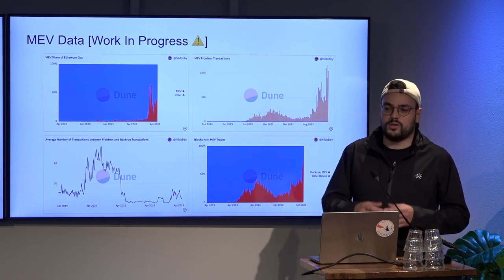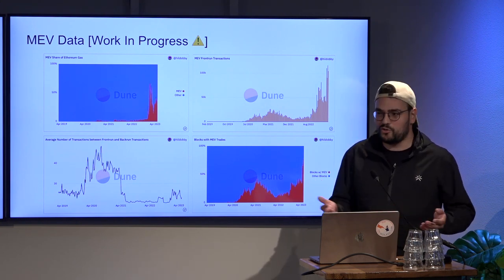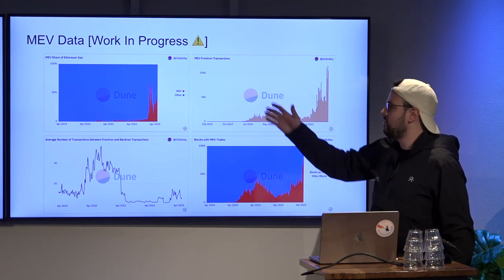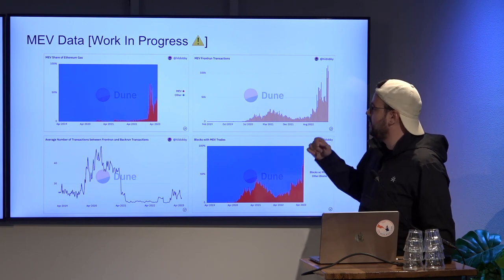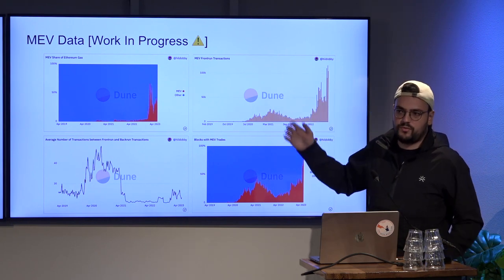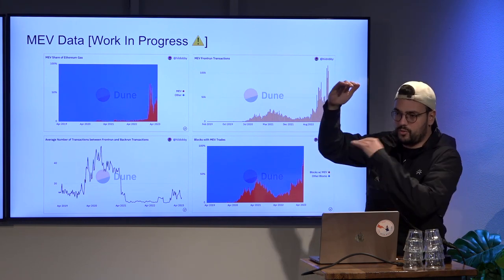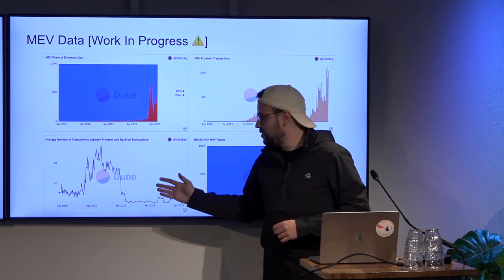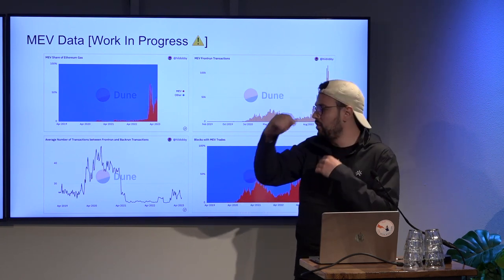There's a lot of data websites that focus on MEV, but they mostly cater to protocol builders and people who are deep into it. I want to make sure this data is also accessible to more normal users. Here you can see the share of gas spiking lately, and the number of front-run transactions. For the sandwich share it's actually times two, because there's the front run and the back run. Also interesting is the average number of transactions in a block between the front run and the back run.